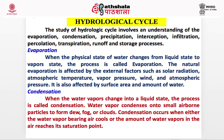When water vapors change into a liquid state, the process is called condensation. Water vapor condenses onto small airborne particles to form dew, fog, or clouds. Condensation occurs when either the water vapor-bearing air cools or the amount of water vapors in the air reaches its saturation point.